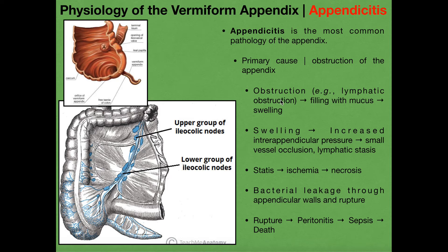For example, if the efferent vessels become blocked, you're still moving lymph into the appendix but not draining it. The appendix fills with mucus and swells, which increases the pressure inside — called the inter-appendicular pressure. This pressure causes small blood vessels and lymphatic vessels to be occluded, causing lymphatic stasis. Whenever that lymphatic fluid stays in there, it tends to cause ischemia, which is failure to deliver blood to the appendix, and that causes death of the tissues.